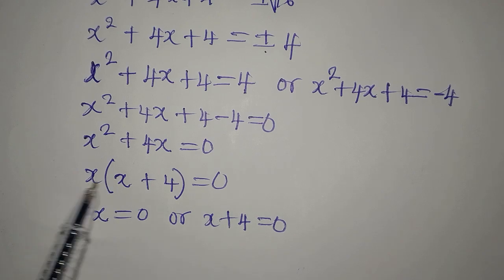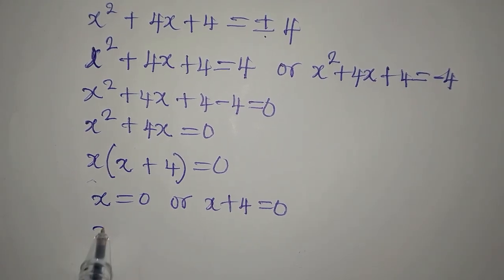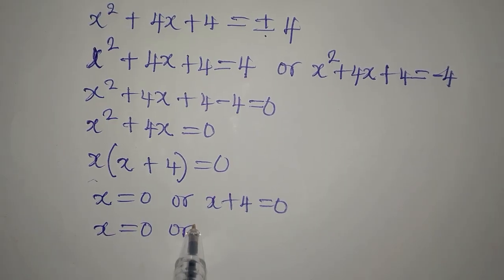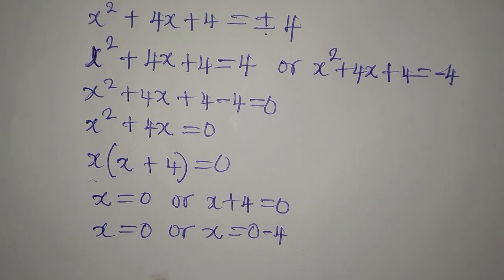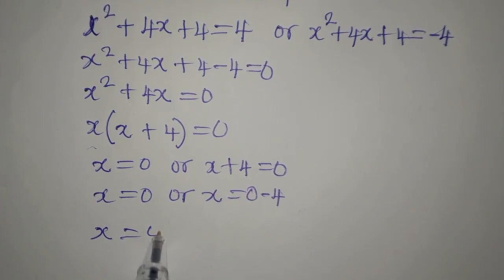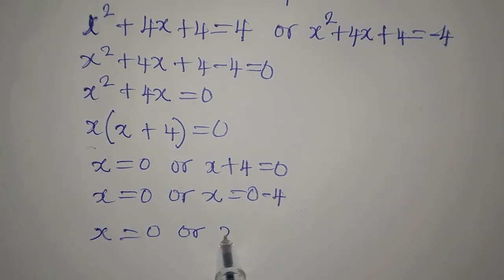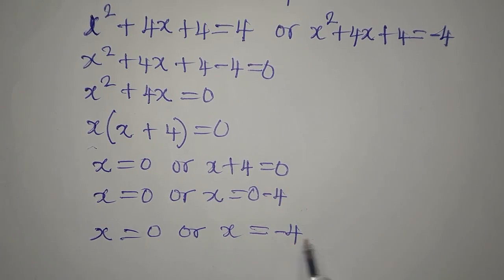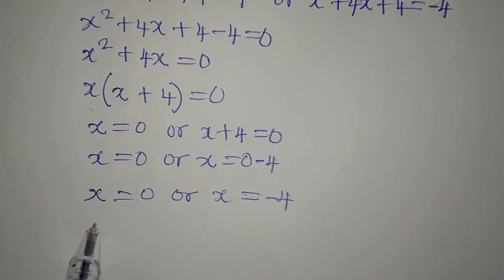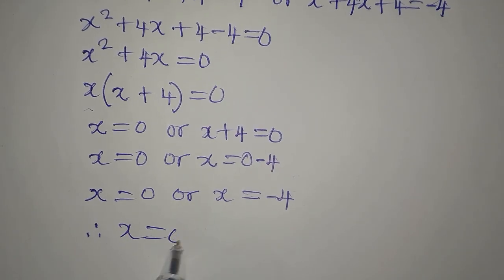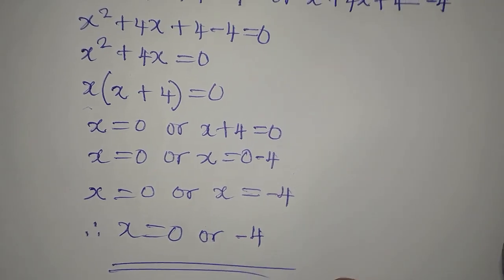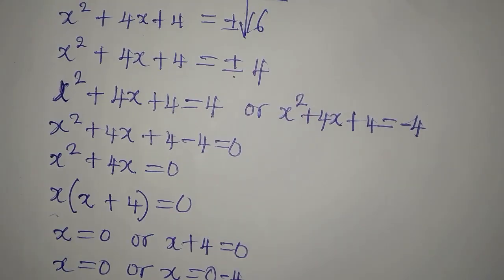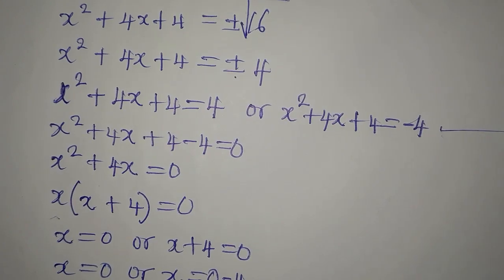This equally means that it's either x equals 0 or x plus 4 equals 0. This is where we apply the zero product rule, because we're multiplying these two to get 0, so one of them must be 0. So x is 0 or x is equal to 0 minus 4, which means x equals 0 or x equals negative 4.